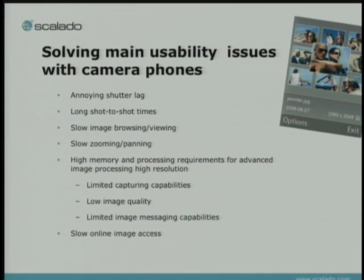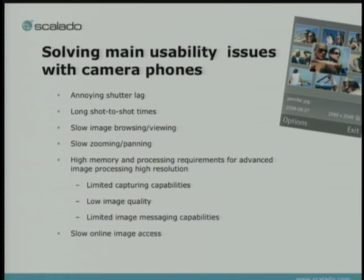So what do we do? We're solving the main usability problems for camera phones: the annoying shutter lag, long shot-to-shot times, slow image browsing experience, zooming and panning both in camera and albums. We're reducing memory use and CPU need for the phone so you can do much more image processing. We're enhancing your capturing capabilities, improving your image quality, improving the messages you can send to your friends, and we have solutions for fast online access.